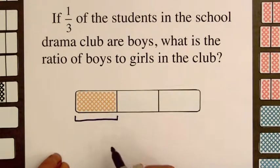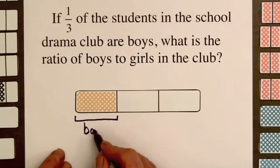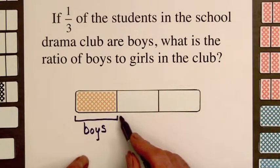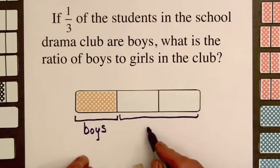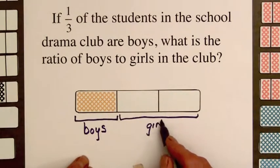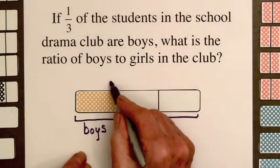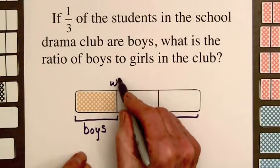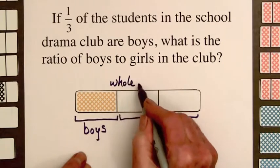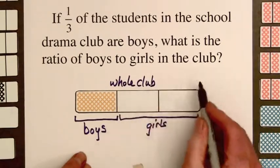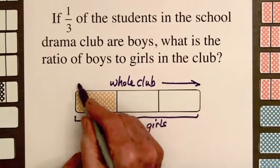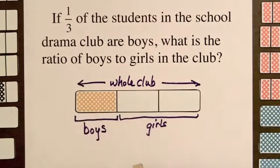This shaded part of the bar represents the boys. The unshaded part represents girls. The whole club is represented by the bar.